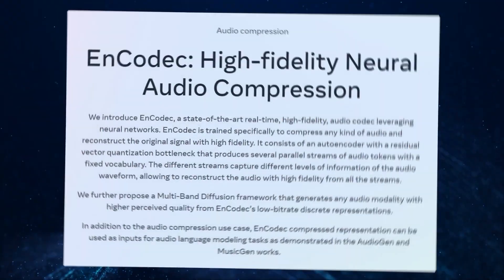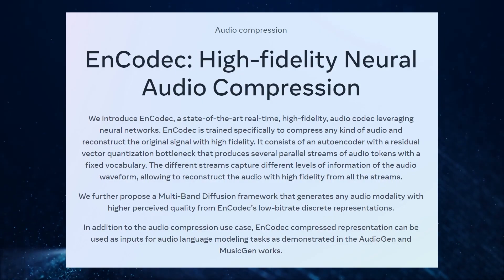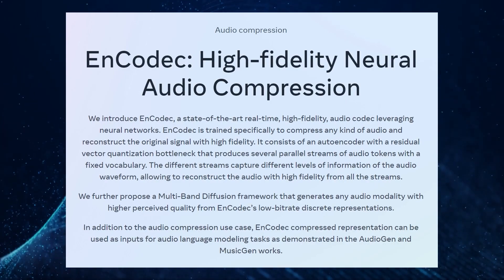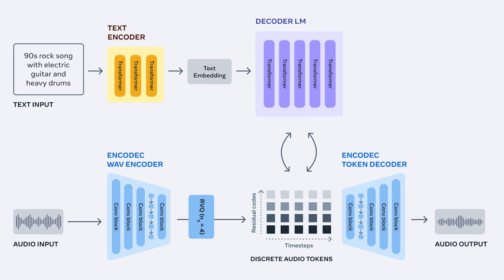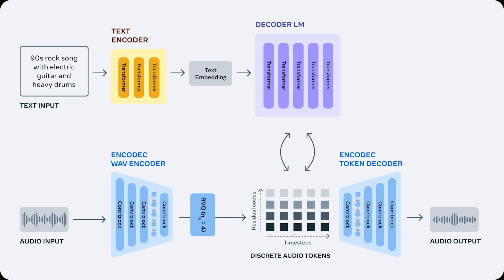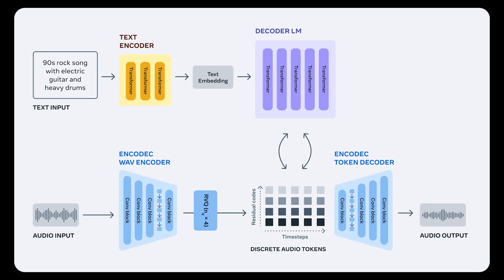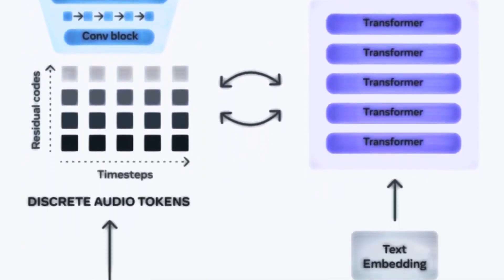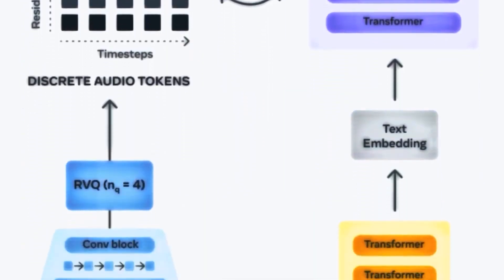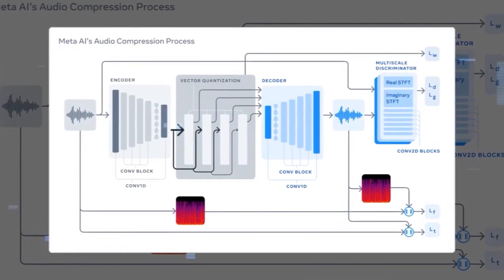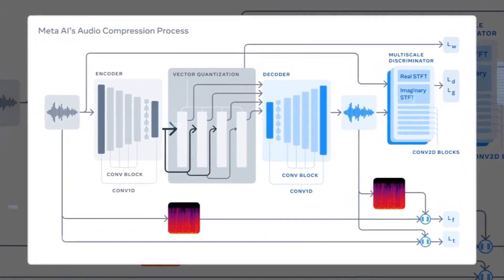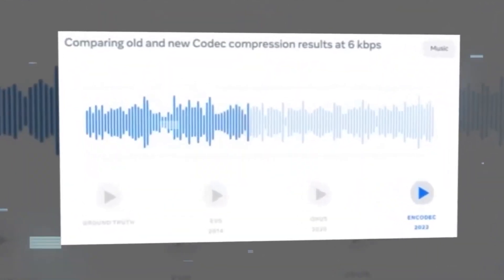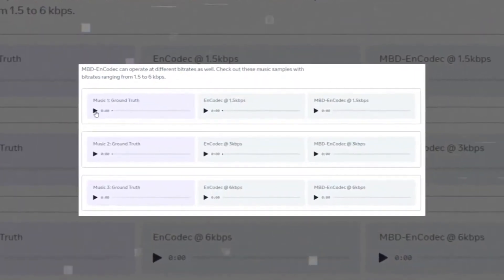In contrast, the codec model operates as a neural audio compression technique that preserves audio quality during compression, making it particularly suitable for rapid sharing. Notably, these models are trained on unprocessed audio signals, eschewing the use of MIDI or piano rolls. This choice ensures the creation of high-caliber audio that emanates a lifelike and natural aura.